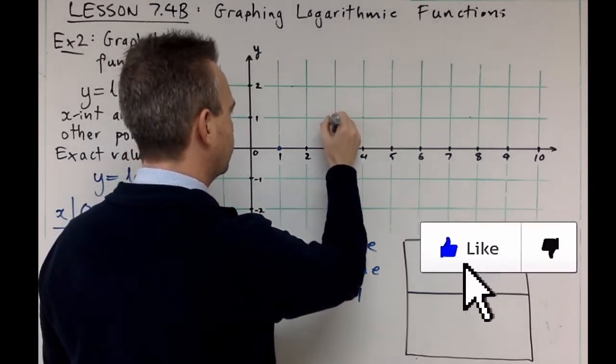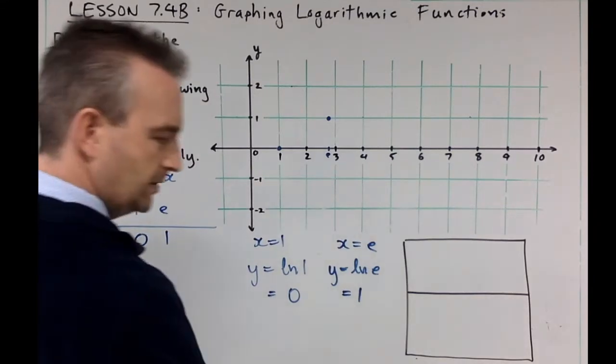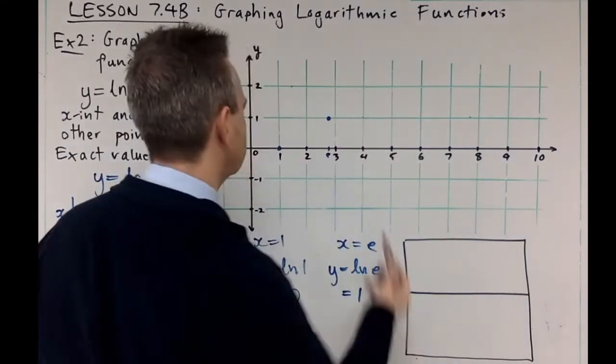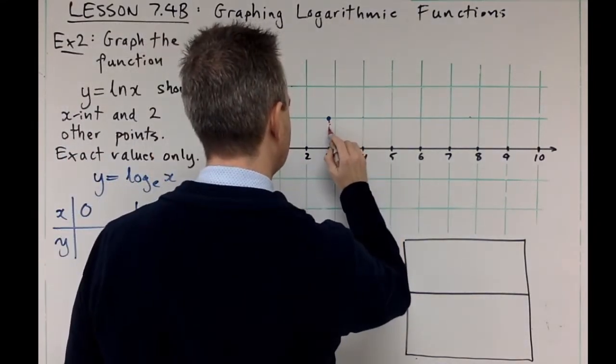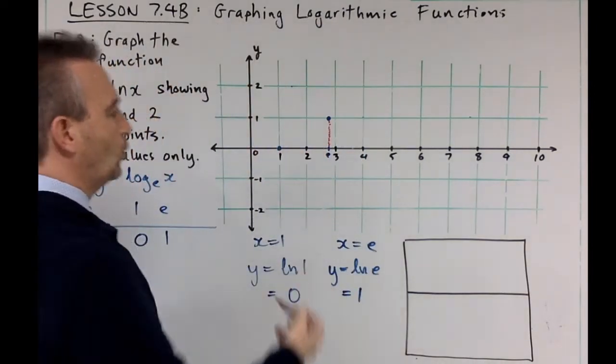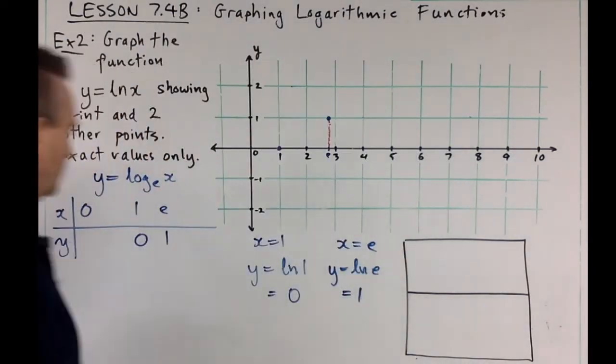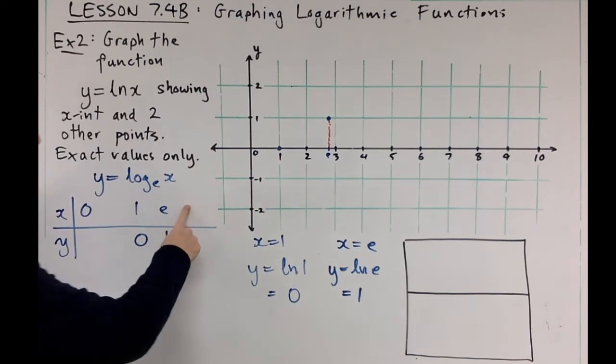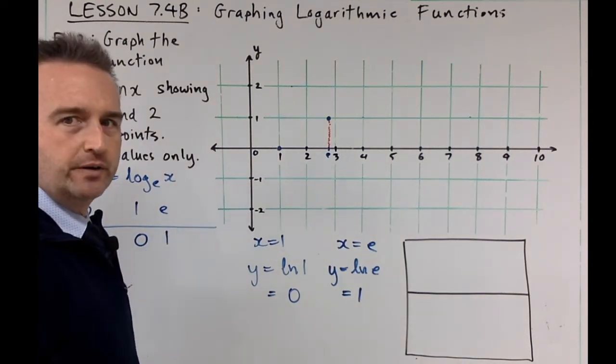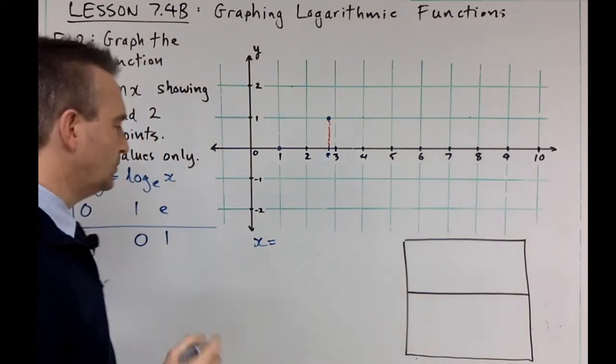So we've got that point there, might just put a little dot in there. It's the point e, one. What else can we do? 2e? No, 2e won't work - you can try but we'll end up with a decimal. We're going to do e squared.